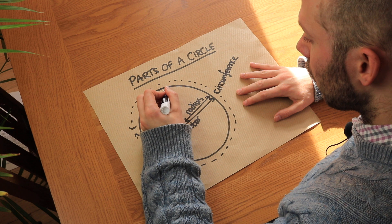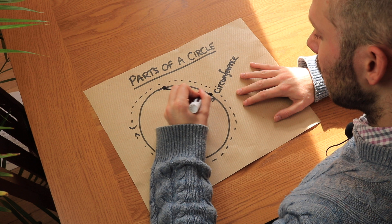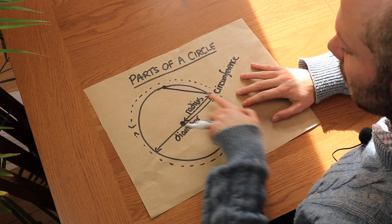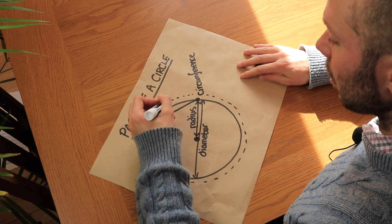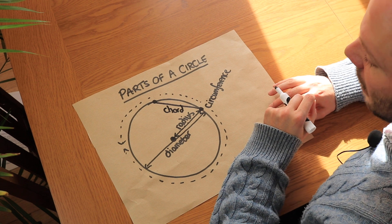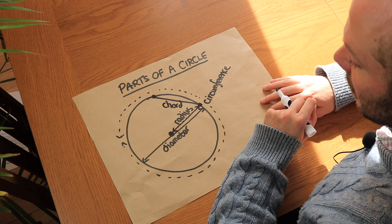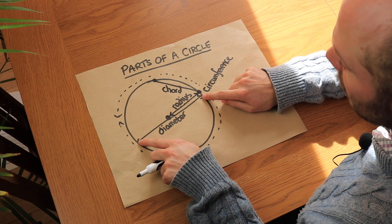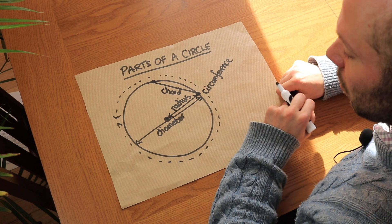If we connect a line between any two points on the circle, this is not called the radius because it doesn't connect the center to the circumference — it connects just two points on the circumference. That is known as a chord. So a chord is a line that connects any two points on the circumference. The diameter is actually a special example of a chord, because it does connect two points on the circumference, but it passes through the center.